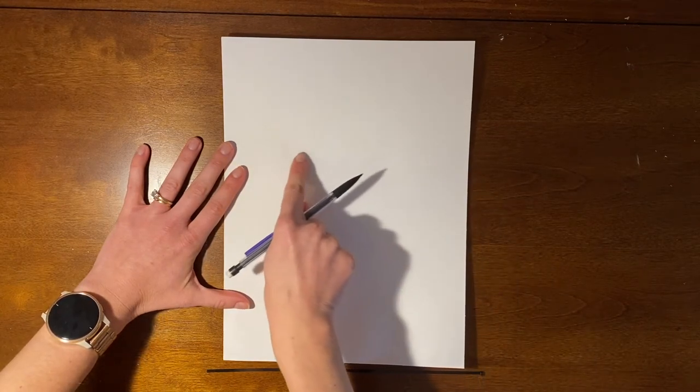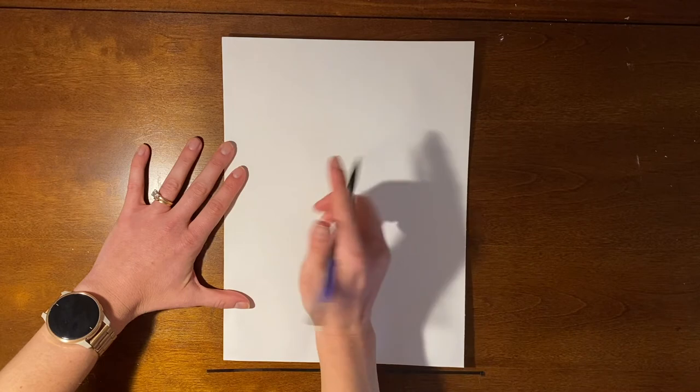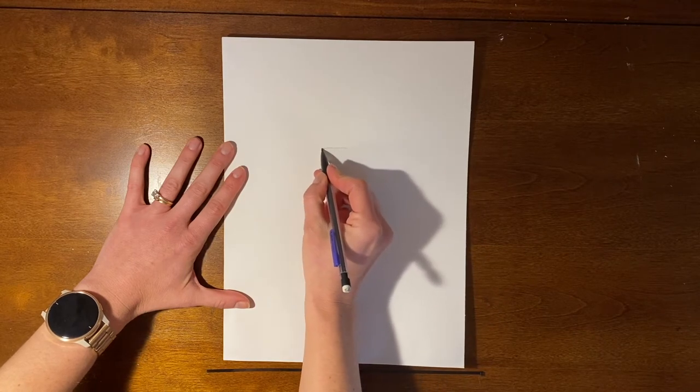Start by drawing an oval on its side in the middle of your paper. This is the opening of our mug.